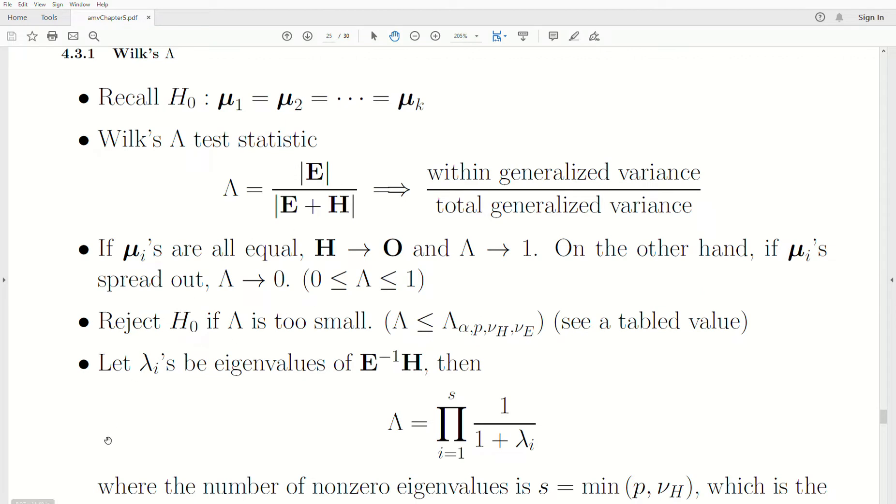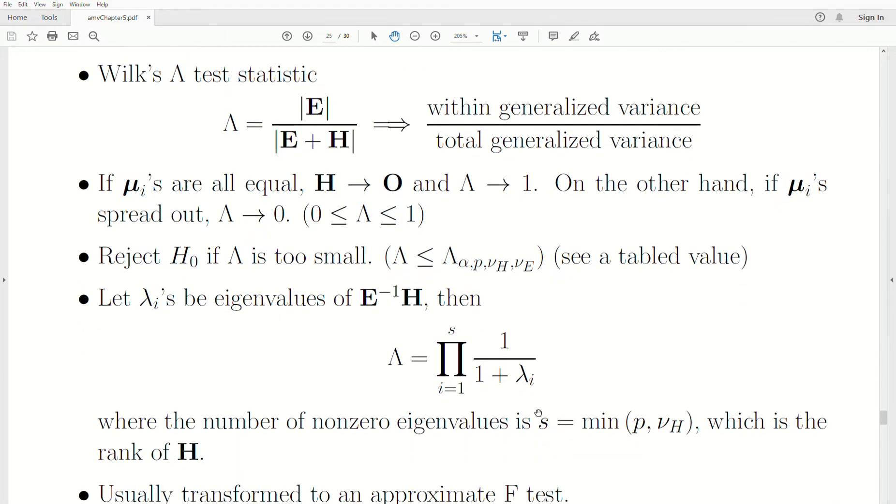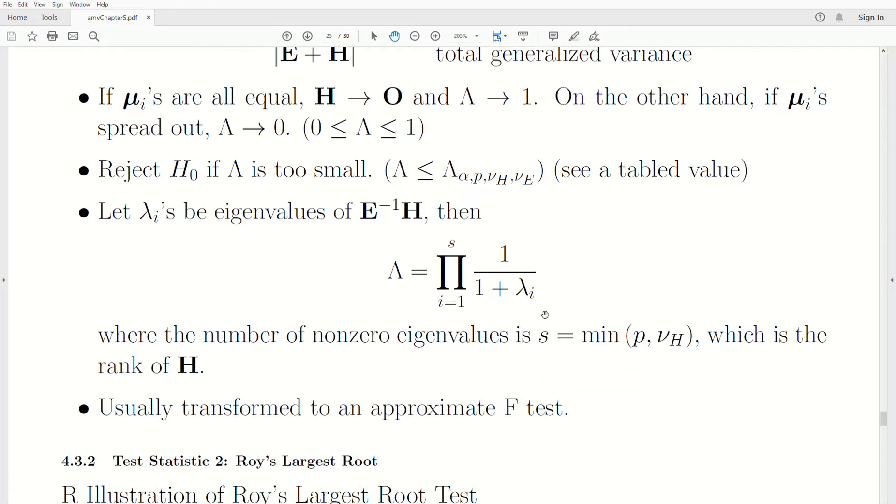Now, it can be shown that if we look at the eigenvalues of this matrix product between the error matrix and the hypothesis matrix, then Wilks' lambda is equivalent to this product, where it's one divided by one plus lambda i. It's a product of those. And usually, this is a pretty complicated distribution, and it only has table values for sort of relatively small numbers. And so it's usually transformed to an approximate F test.